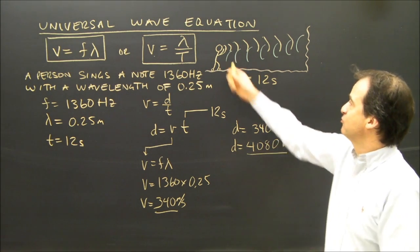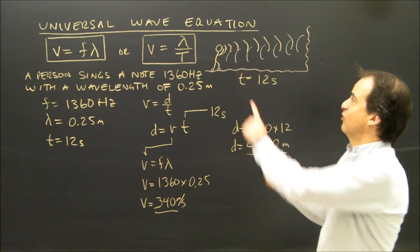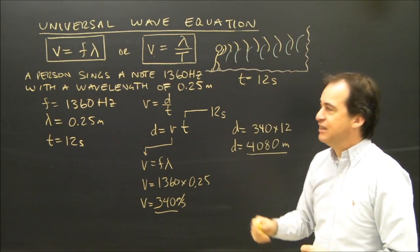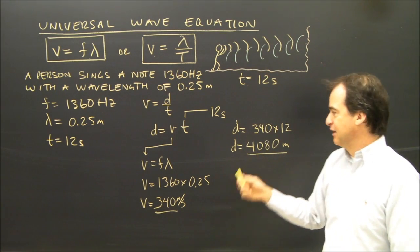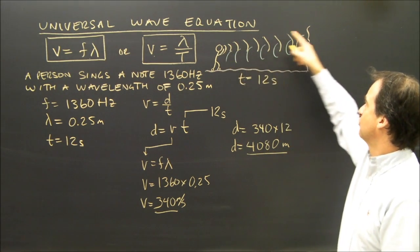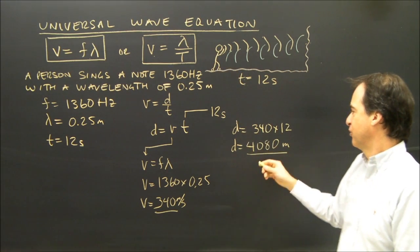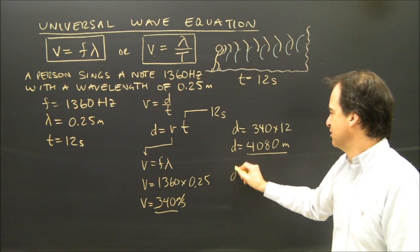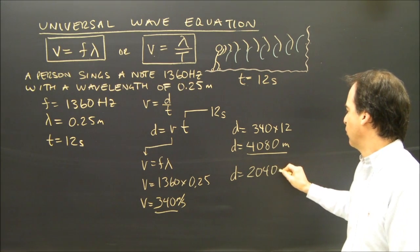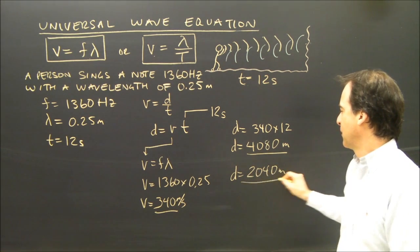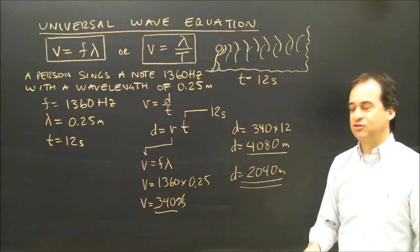But that's how far the wave traveled in total — it went from the person to the mountain and back, because we heard the echo 12 seconds later. So the mountain is not 4080 meters away; it's going to be half that distance. It took half the distance to get there and half to get back, so the actual distance is 2040 meters. The cliff or mountain is 2040 meters away.